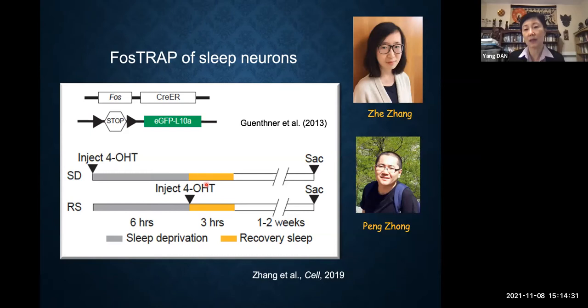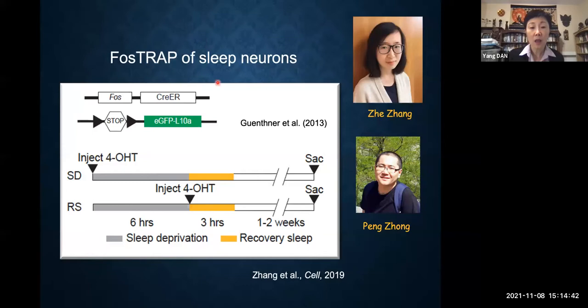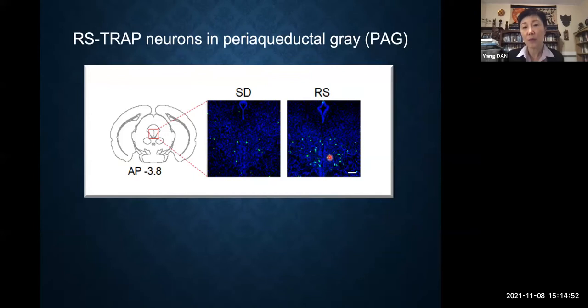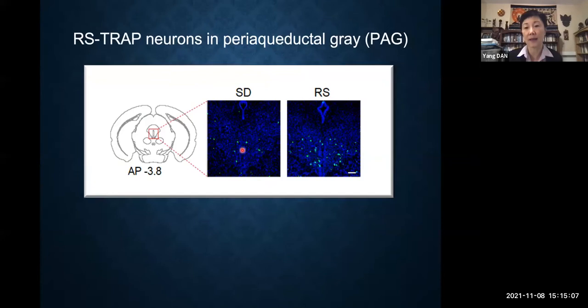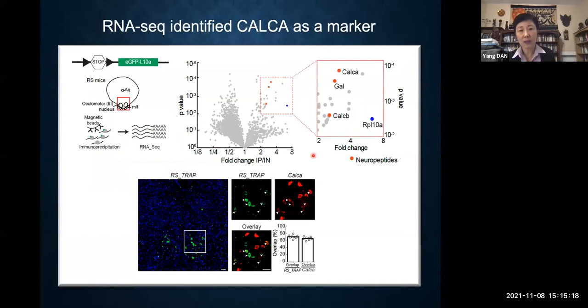This project was done by Zhe Zhang and Peng Zhong, both former postdocs in my lab — Zhe is now running her own lab in Shanghai. When we compared the two groups and looked at GFP labeling across the whole brain, we found one brain region — the ventral region of the periaqueductal gray, the vPAG, which is this pear-shaped structure in the brain — showing a lot more GFP labeling in the recovery sleep group than the sleep-deprived group. We then did gene profiling to figure out the identity of these GFP-labeled neurons in the ventral vPAG.